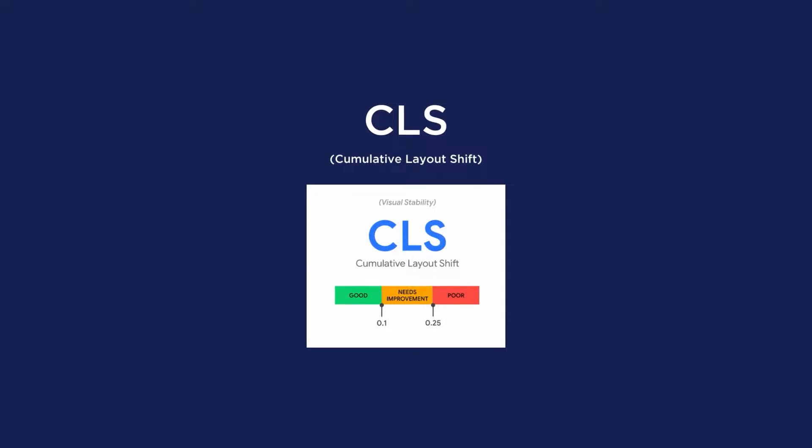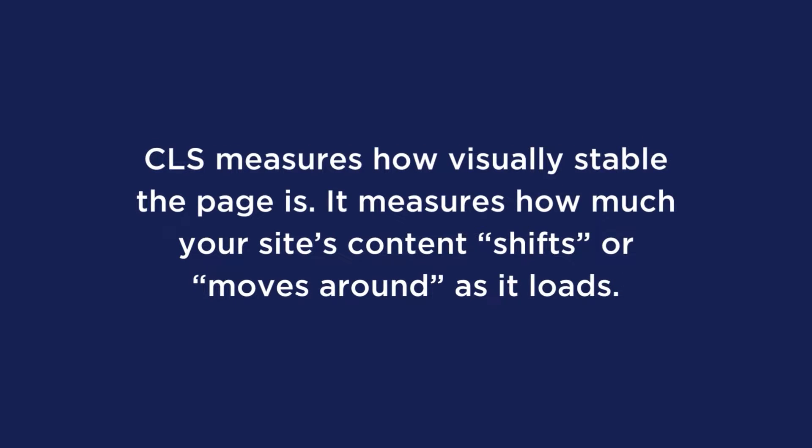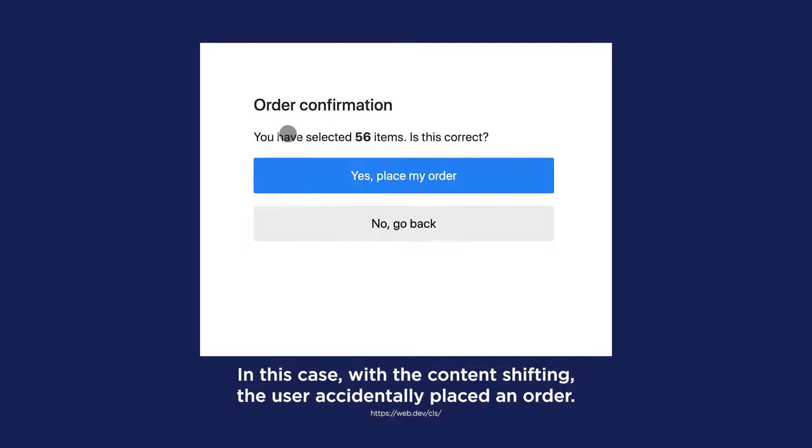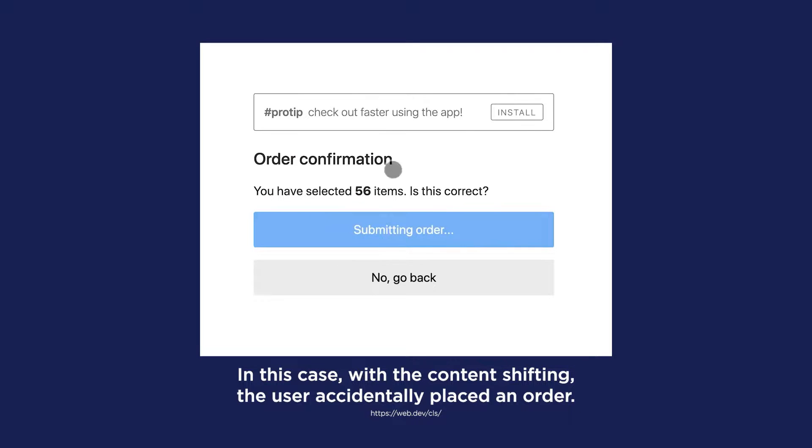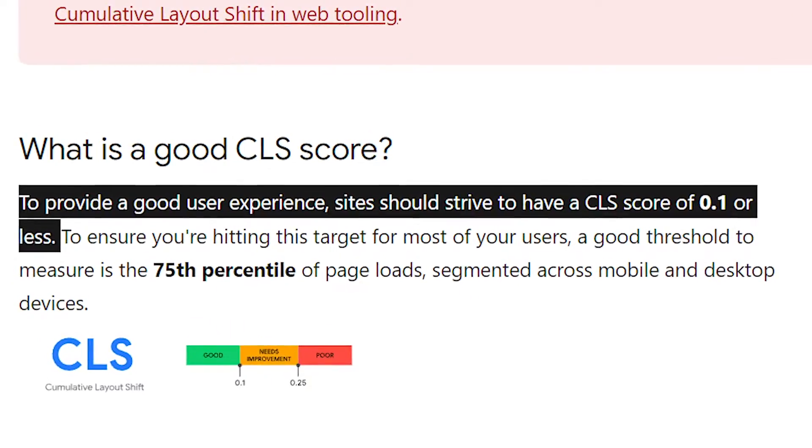The last CWV metric is Cumulative Layout Shift. CLS measures how visually stable the page is — how much your site's content shifts or moves around as it loads. For example, if you're about to click a call to action and the content moves down just before you click, that's a layout shift. The same goes for accidentally clicking the wrong button because late-loading content caused a shift, or being on a news website where content keeps shifting as ads load. Every time content shifts, that counts as a layout shift. A good CLS score should be 0.1 or less.